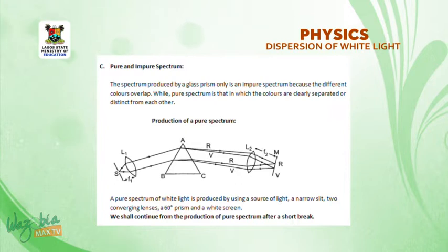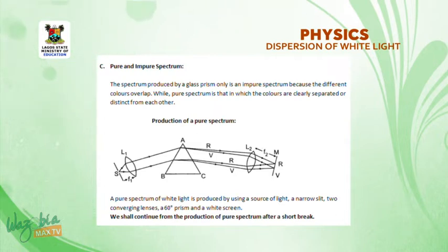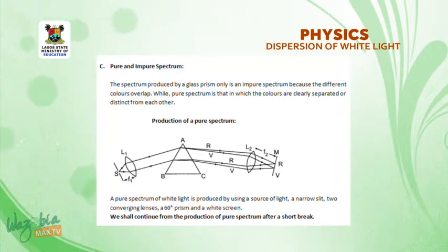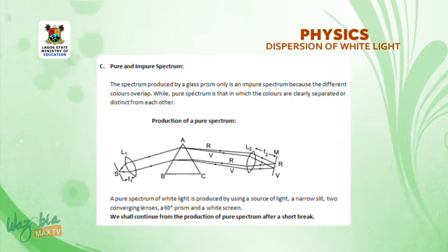Production of a pure spectrum. How can we produce a pure spectrum? A pure spectrum of white light is produced by using a source of light, a narrow slit, two converging lenses, a 60-degree prism, and a white screen. We shall be looking at how to produce this pure spectrum after we return from a short break.